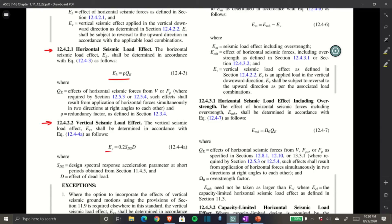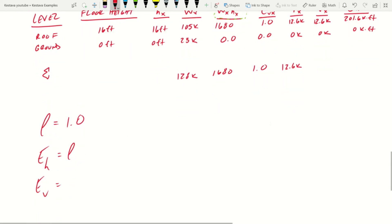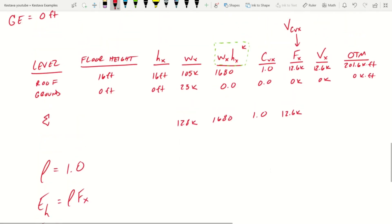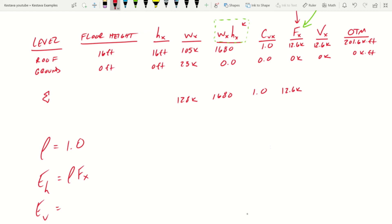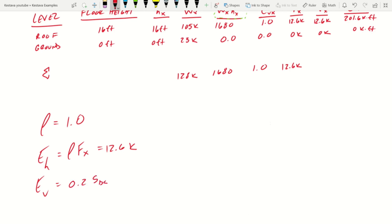EV is just as follows, 0.2 times SDS times D. D is effect of the dead load. So that's just your, basically, D is your big W, your effective seismic mass. And up here, QE is effects of horizontal seismic forces from V or FP. We know, so for us, that's VX. So let's jump back. So EH is equal to rho, we could just say FX if we wanted to. So FX, as we recall, is here. So that is just times 1.0. So E sub H is equal to 12.6 kips. And then E sub V was 0.2 times SDS times W. That gets us 0.2, 0.64, 128 kips. That gets us 16.38 kips. And there you have it.